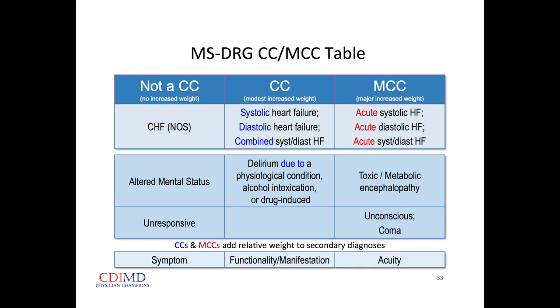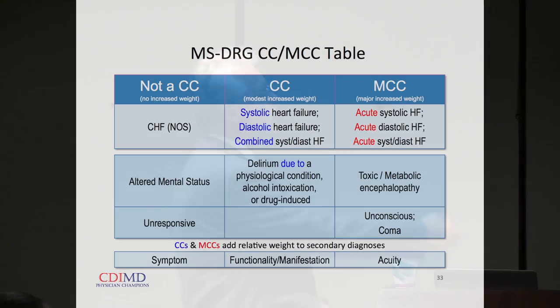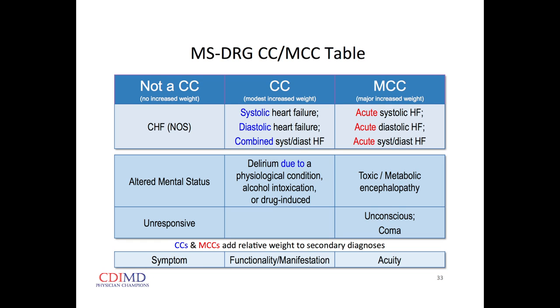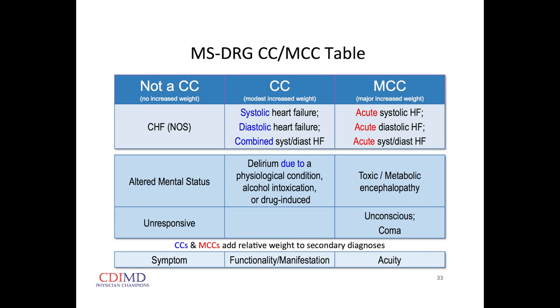This is a table identifying three levels of severity within a condition — we're talking about heart failure. Not a CC gets no increased relative weight, CC gets modest increased relative weight, and major gets increased relative weight. Years ago when I was training, the diagnosis was just CHF — everybody knew they had heart failure, it got worse, they had to be in the hospital. The current system of coding makes no such assumptions. When we just use the word heart failure, we get no credit. None. If we add functionality — systolic, diastolic, or combined — we get some increased relative weight, but the coding system asks: what's different from last week when they weren't in the hospital? What's different is they had an acute exacerbation of systolic, diastolic, or combined heart failure. To get credit, that is the term we have to use.